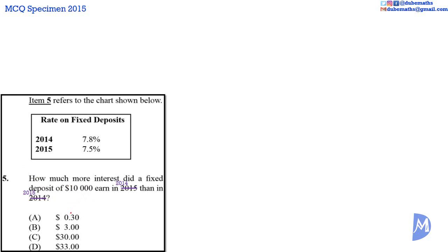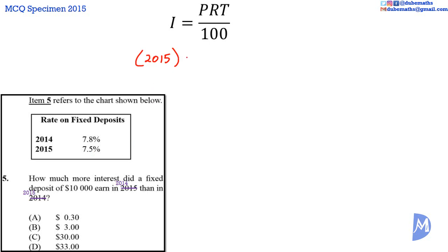The simplest way to approach this question, admittedly not the fastest, is to determine the interest earned in 2014 and the interest earned in 2015 and find the difference. Interest earned in 2015 is equal to principal multiplied by rate multiplied by time, over 100. The principal is $10,000, the rate in 2015 was 7.5%, and we are asked about 2015 only — so the time is equal to one year.